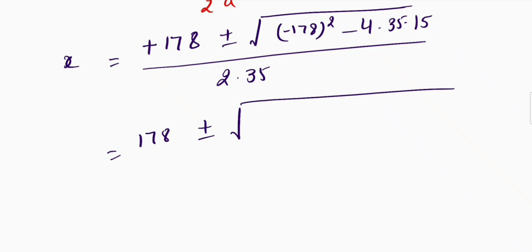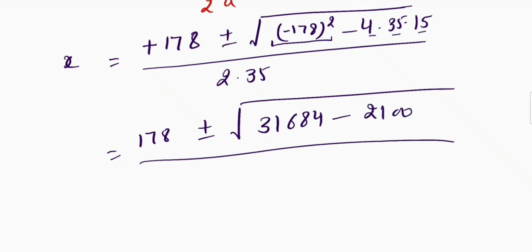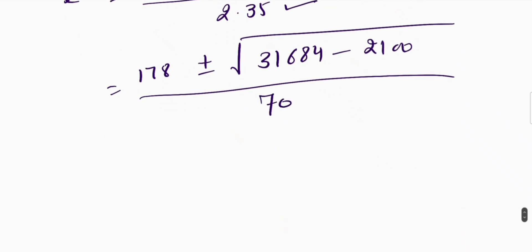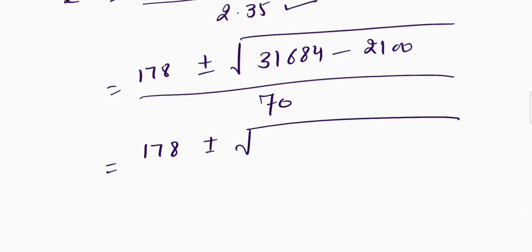Squaring 178 gives 31684. Multiplying 4 times 35 times 15 gives 2100. So under the square root we have 31684 minus 2100, and the denominator is 2 times 35 equals 70. This gives 178 plus or minus square root of 29584, divided by 70.